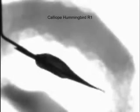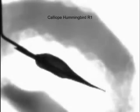The third type of mode are torsional or twisting modes, as exhibited by this calliope hummingbird tail feather.